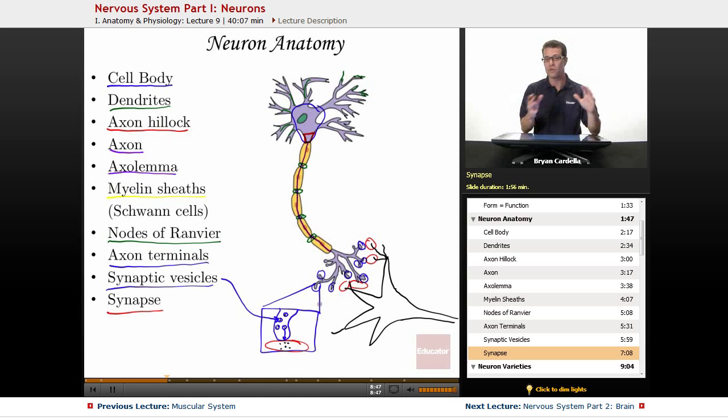So if you consider all those different connections, the potential for those connections in the brain, you can see how a hundred billion neurons can give you a lot of variety in terms of the neural pathways, because a hundred billion neurons times tens of thousands of synapses, it's amazing to think about.